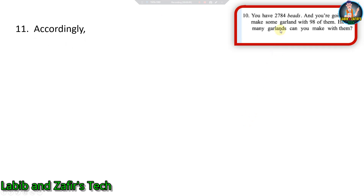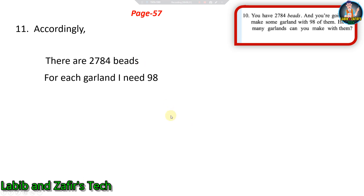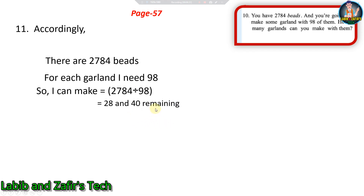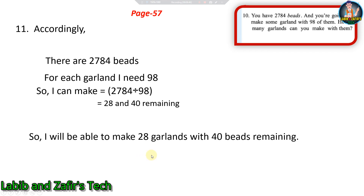Another question: you have 2,784 beads and you are going to make some garlands with 98 of them each, how many garlands can you make? There are 2,784 beads and for each garland we need 98 beads. So we can make 2,784 divided by 98 garlands, that is 28 garlands with 40 beads remaining.